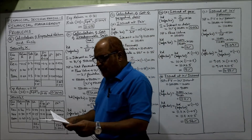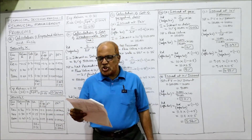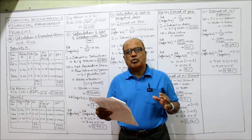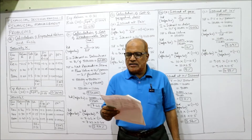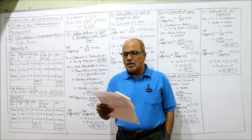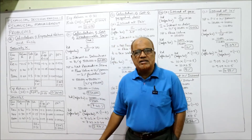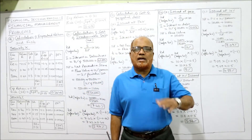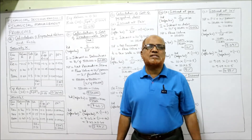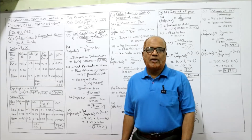Problem number 9: The following information is related to two securities X and Y under different economic conditions — recession, normal, and boom. The probabilities are: recession 0.2, normal 0.5, boom 0.3. Expected returns for security X are -0.15, 0.20, 0.60, and for security Y are 0.20, 0.30, 0.40. We are required to calculate the expected return and risk, where risk is measured as standard deviation.